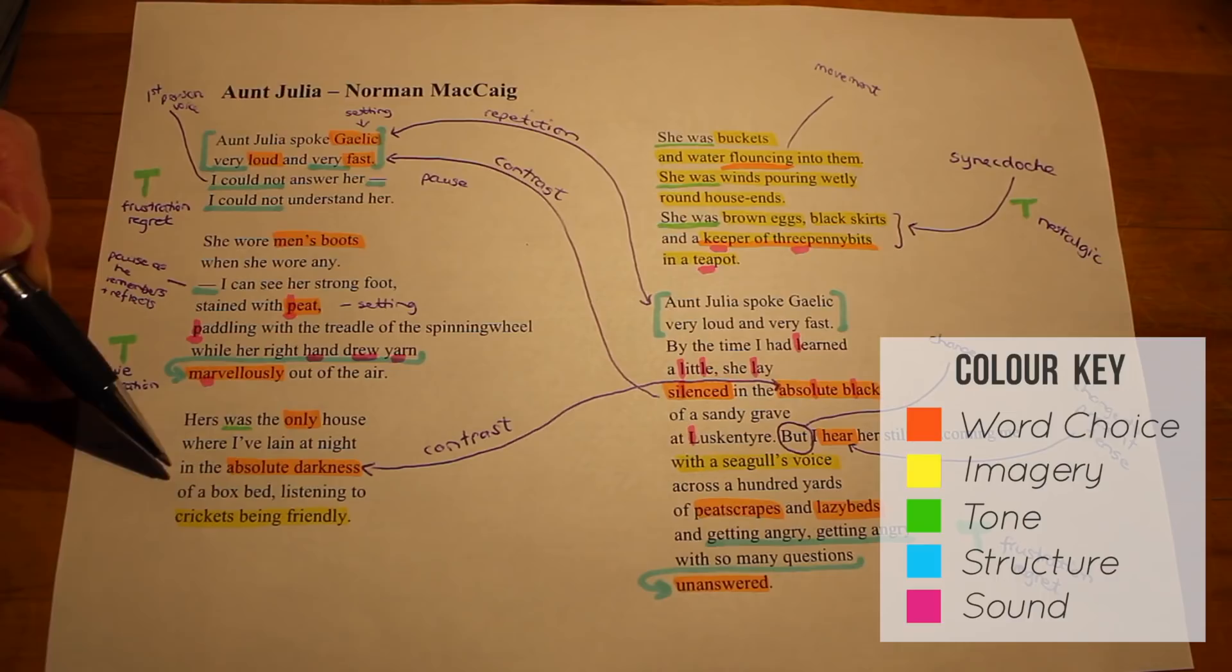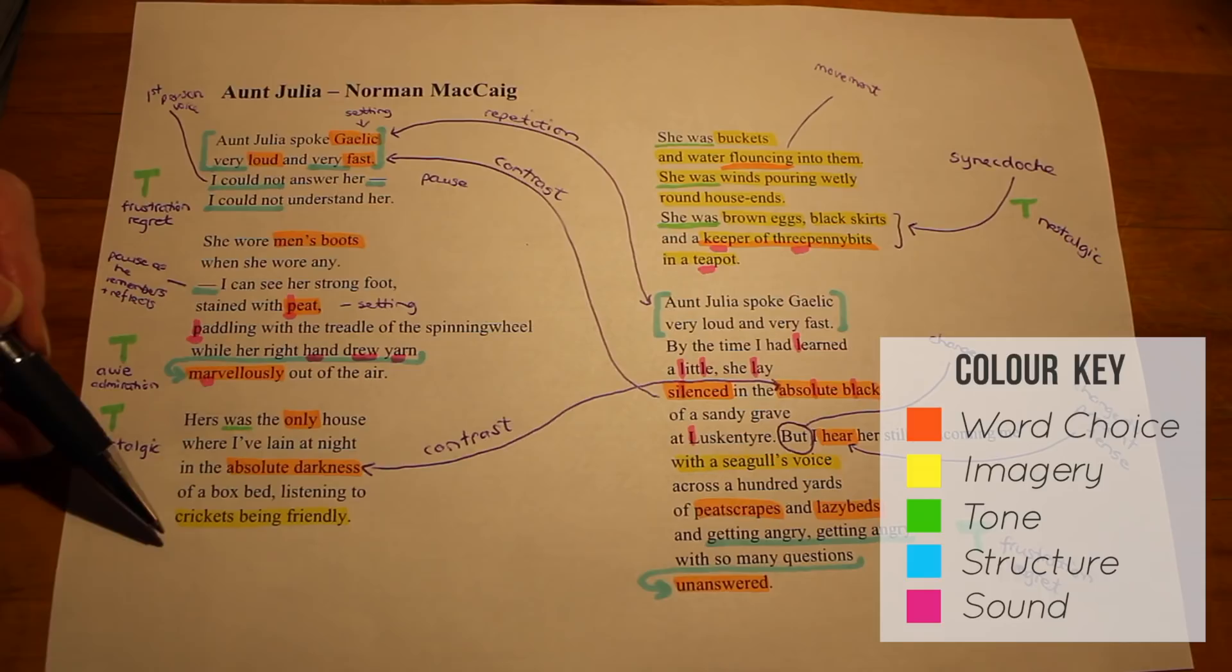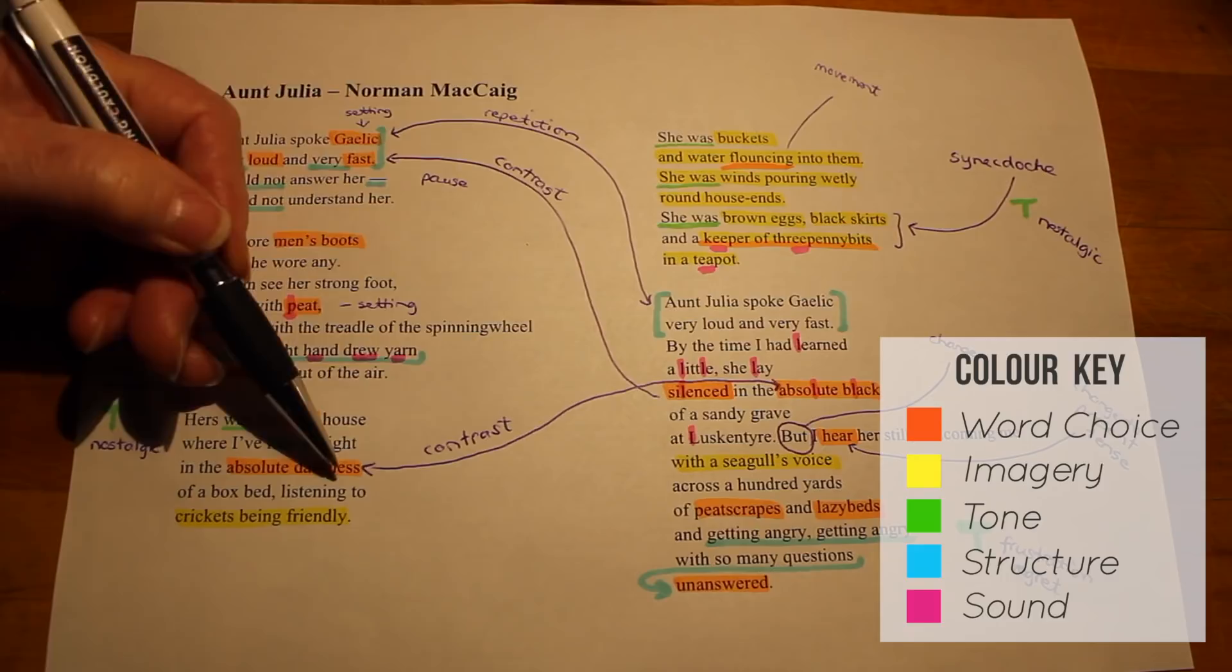And then he talks about listening to the crickets being friendly, and this lovely personification of the crickets, showing again that he felt completely at ease in this natural setting. So different from his life in Edinburgh, where he was brought up. Here he is in the Outer Hebrides, far away from home, but he feels completely comfortable. And the absolute darkness here is a stark contrast to the last stanza, where we have absolute black.